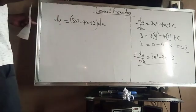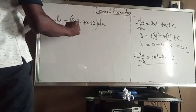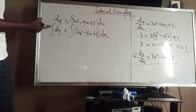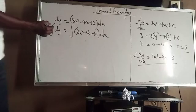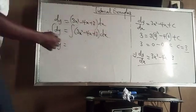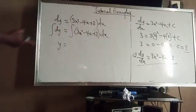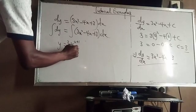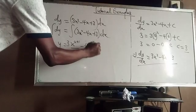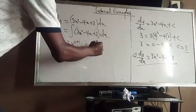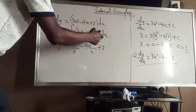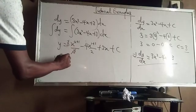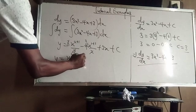Now we integrate again to get y. The integral of dy equals the integral of (3x² − 4x + 3) dx. Integrating: 3·(x^(2+1))/(2+1) minus 4·(x^(1+1))/(1+1) plus 3x, which gives x³ minus 2x² plus 3x, plus a constant d.